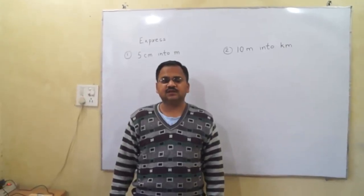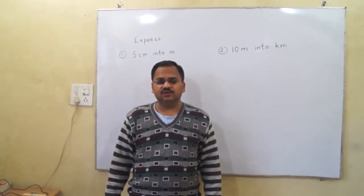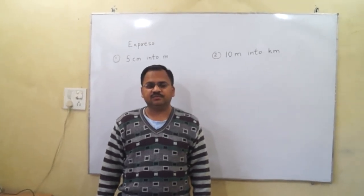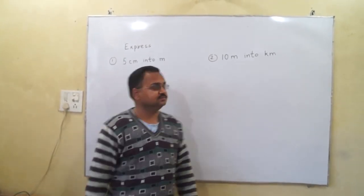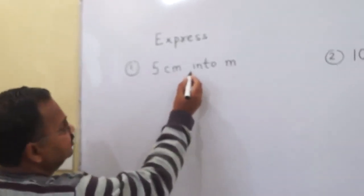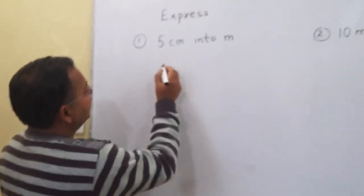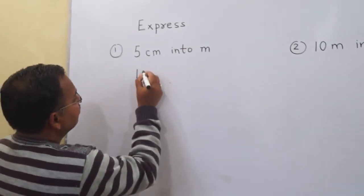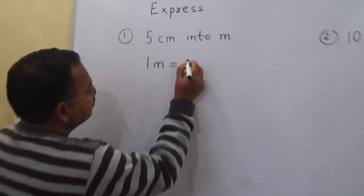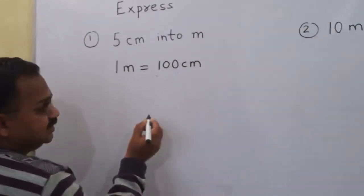Dear students, welcome to mathematics education. Today we will discuss how to change one unit of measurement into another. We have our first sum: 5 centimeters into meters. We know that one meter is equal to 100 centimeters.